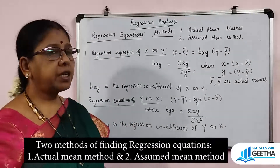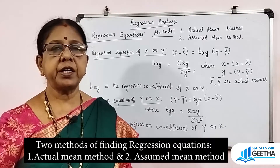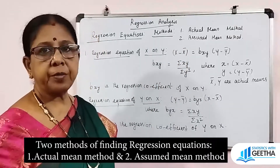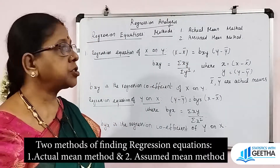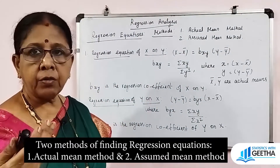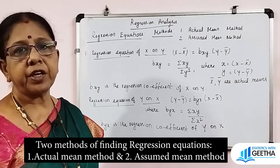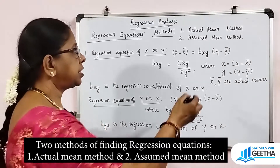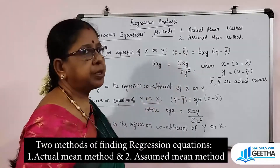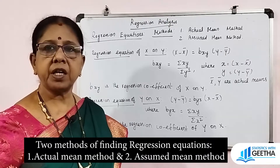There are two methods available to find the regression equation. One is the actual mean method and the other is the assumed mean method. In the actual mean method, deviations are taken from the actual means. In the assumed mean method, deviations are taken from the assumed means of the variables x and y.